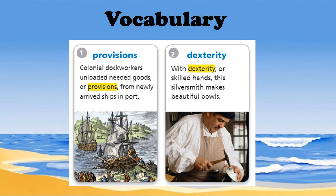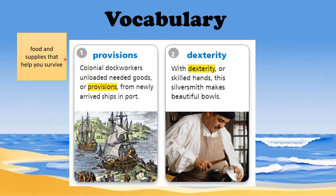Let's begin with vocabulary in context. Number one is provisions. Colonial dock workers unloaded needed goods or provisions from newly arrived ships in ports. This is about people who work in docks or seaports during colonial America. The meaning of provisions is needed goods — food and supplies that help you survive.